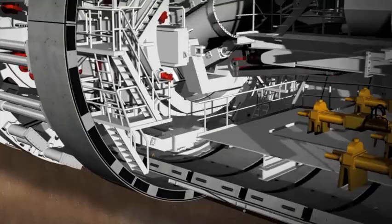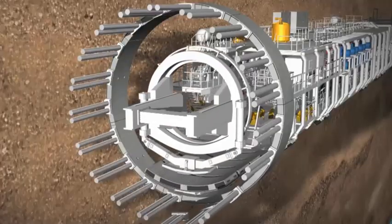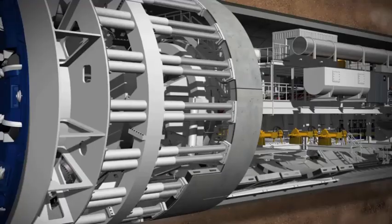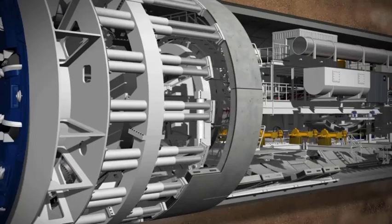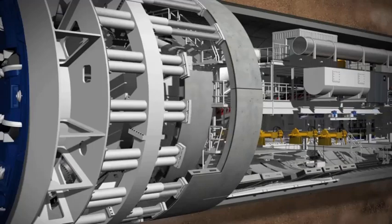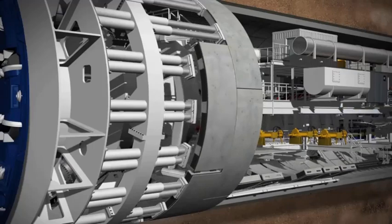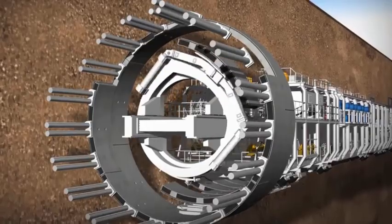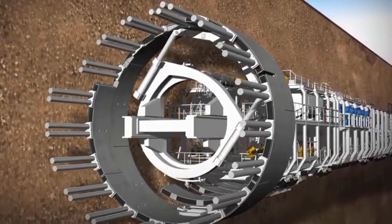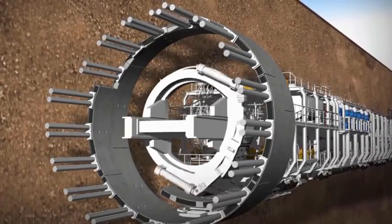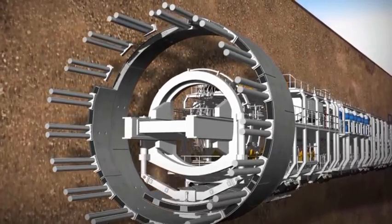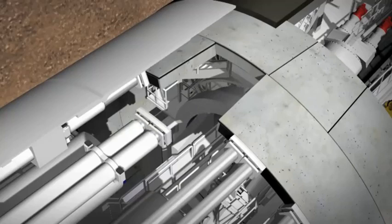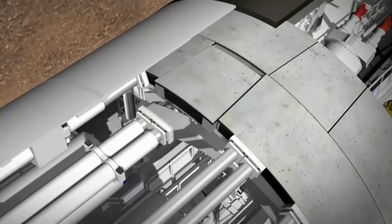The concrete segments are fed in by the segment feeder and lifted into place using a vacuum. The hydraulic cylinders are temporarily retracted in order to provide enough space for the new segment. The segments are positioned with millimeter precision and held in place by cylinders before being finally bolted into position. The conical keystone is put in from the front to complete the lining ring.